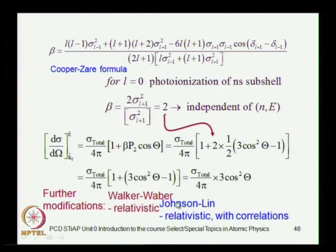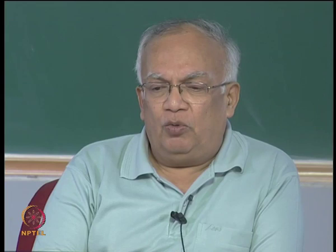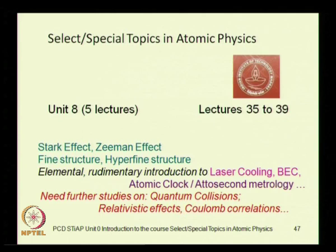In the non-relativistic case, the angular distribution is described by the Cooper-Zare formula, but when doing relativistic quantum mechanics one has to make corrections to it — relativistic expressions were developed by Walker and Weber. One can further plug in electron correlations, requiring a relativistic many-body theory; this is found in the work of Johnson, Lin, and others. So you will get some introduction to the angular distribution of photoelectrons.